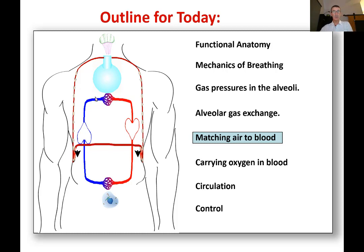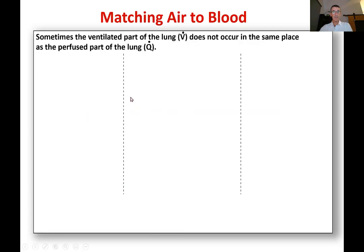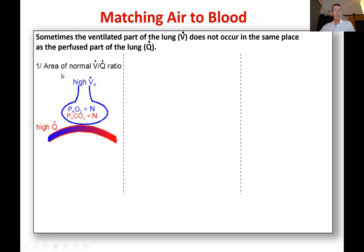There's nothing centrally saying that all the blood and all the ventilation goes to the same place. So how is it that the blood supply goes to the place where the ventilation is going? Because sometimes the ventilated part of the lung does not occur in the same place as the perfused part of the lung. On the left, I've shown an example of where you've got good ventilation and good blood supply both going to the same place.